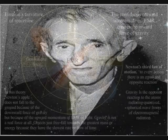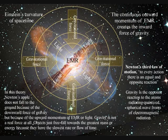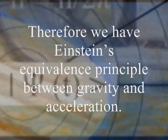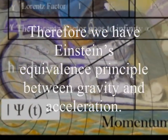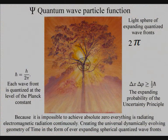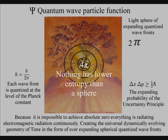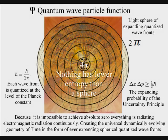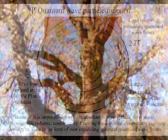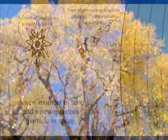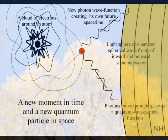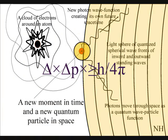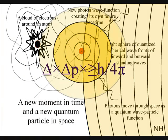In this theory, gravity is a secondary force to the electromagnetic force. Objects freefall towards the greatest mass or energy because it has the slowest rate that time flows. The second law of thermodynamics falls out of this theory — the organization for the spontaneous disorganization of entropy is formed by the spherical symmetry of the quantum wave particle function. The spontaneous absorption and emission of light forms the flow of time, with photon energy cascading down forming greater degrees of freedom for the flow of entropy.